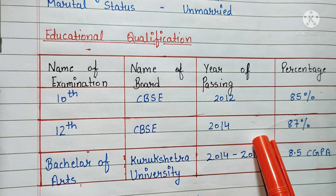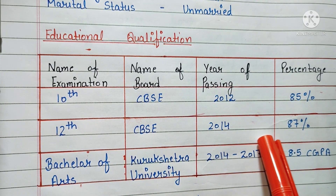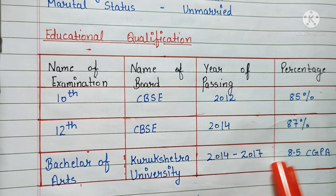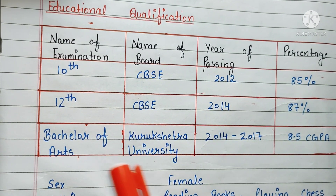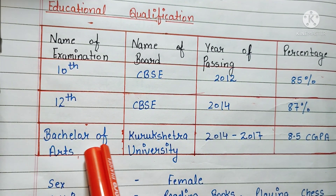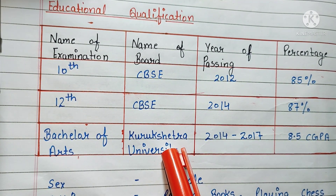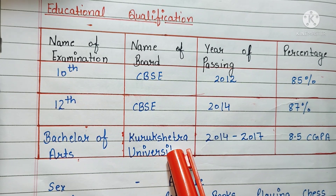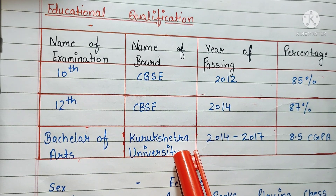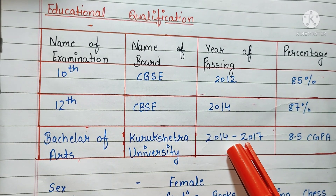Then you have to write your bachelor's degree, like: I have done my Bachelor of Arts from Kurukshetra University from 2014 to 2017 with 8.5 CGPA.